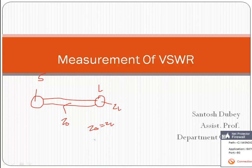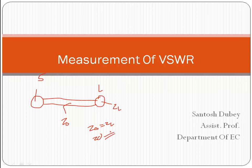If Z0 is not equal to ZL, this is an unmatched transmission line. Due to this mismatch, there is a reflected wave and an incident wave from the source side. The incident wave and the reflected wave make a pattern, and that particular pattern or setup is known as SWR.